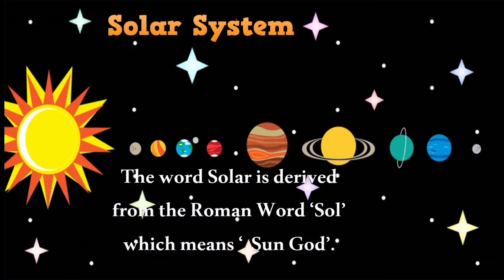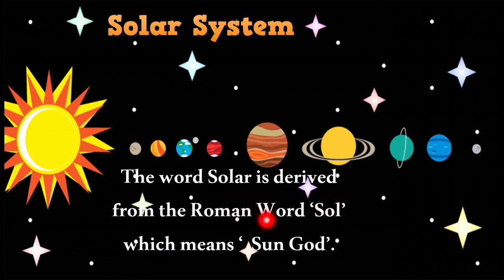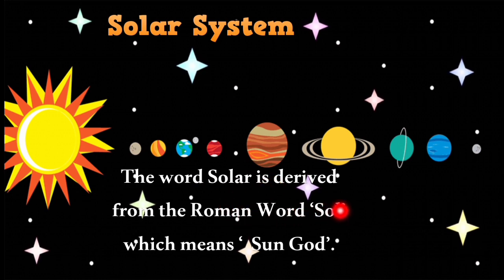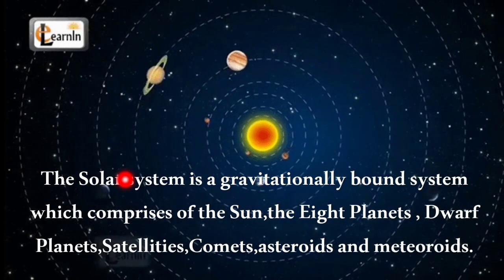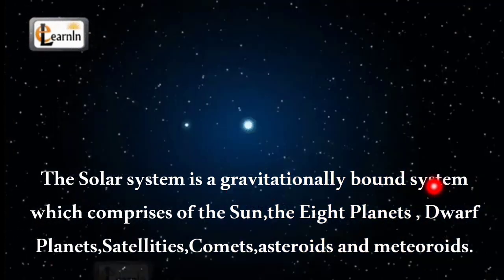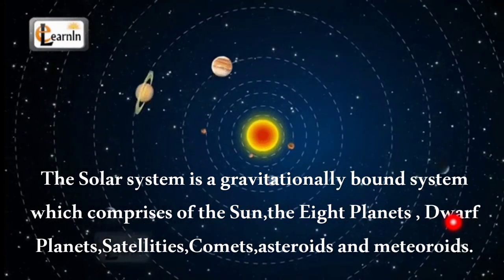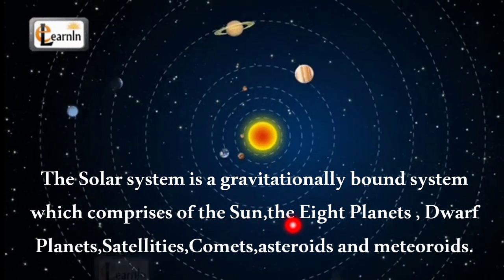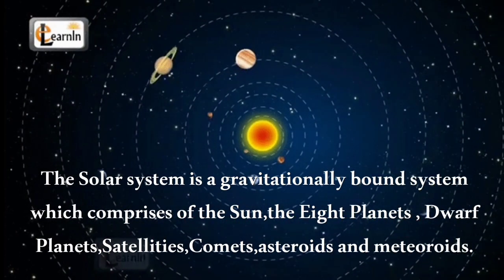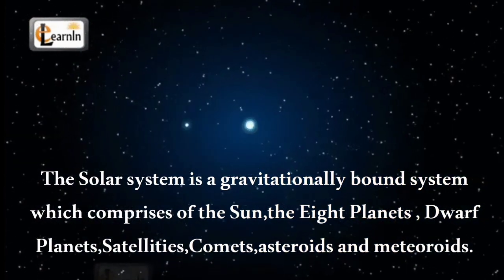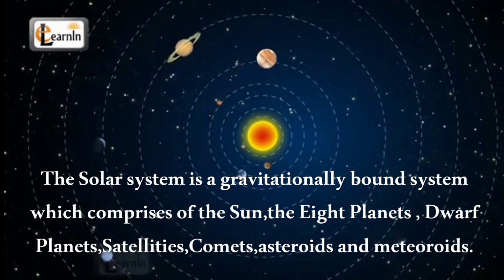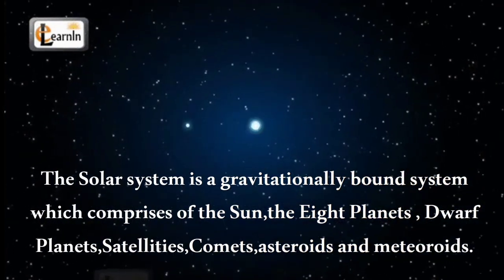The word 'solar' is derived from the Roman word 'sol' which means sun god. The solar system is a gravitationally bound system which comprises the sun at the center and the eight planets, dwarf planets, satellites, comets, asteroids and meteoroids — all bounded by gravitational force.